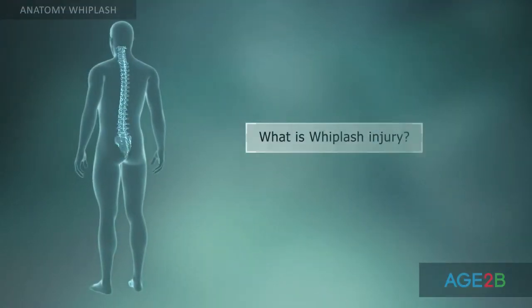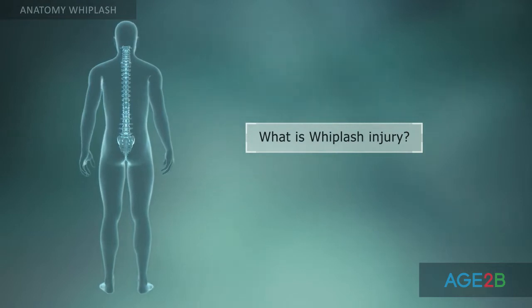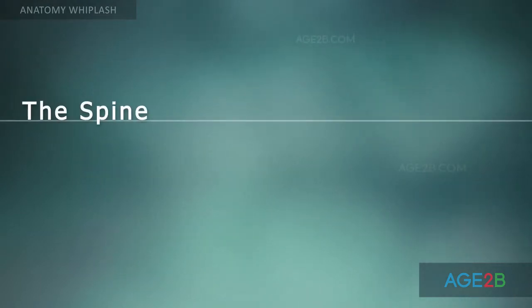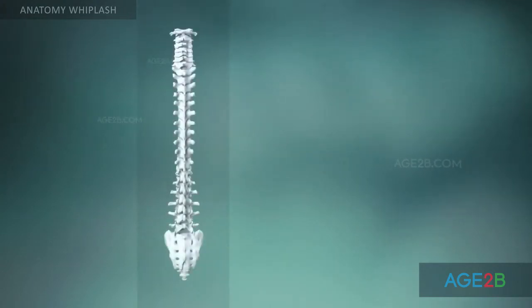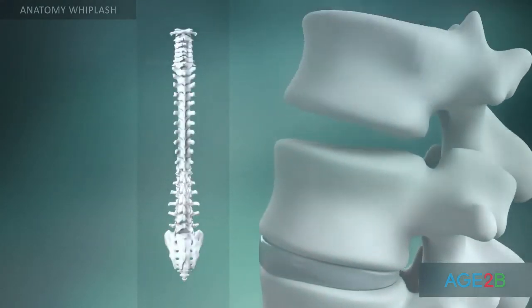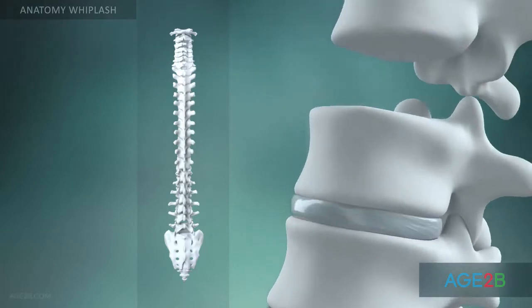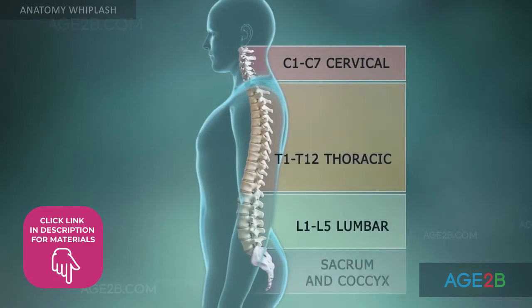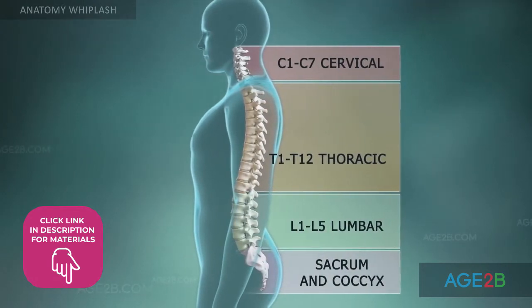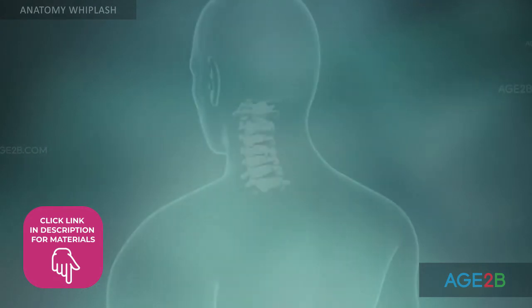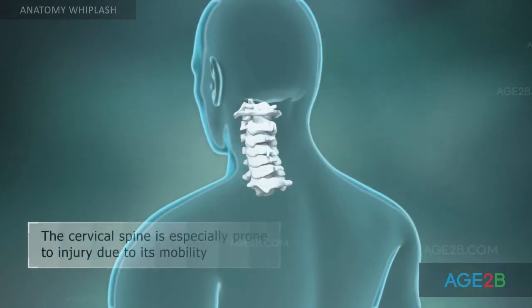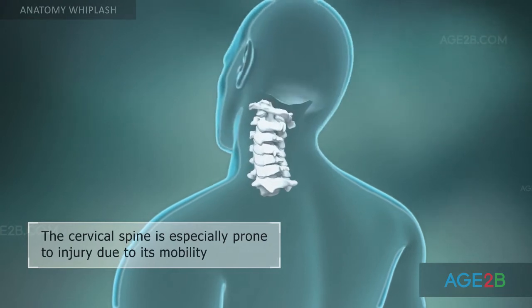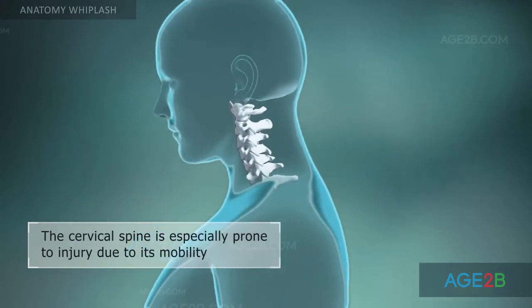In order to understand what whiplash injury is, it's helpful to know the basic anatomy of the spine. The spine is made up of 33 individual bones called vertebrae, separated by spongy discs. The vertebrae are numbered and divided into four regions. The cervical region of the spine — the neck — is delicate but very flexible, and its flexibility makes it particularly prone to injury.